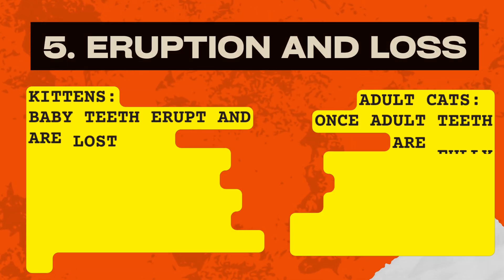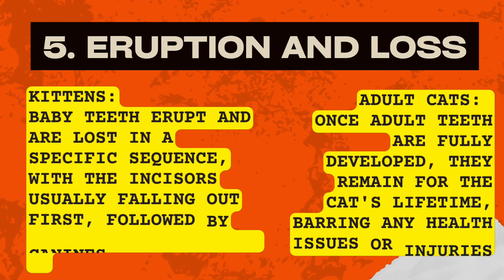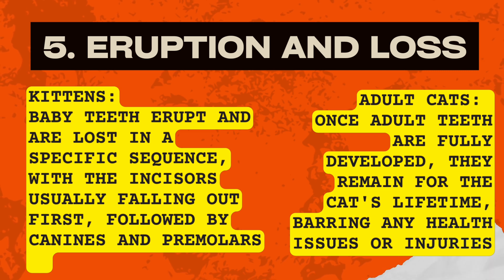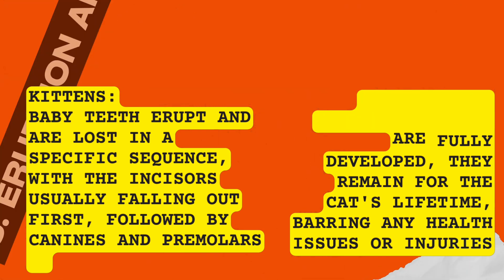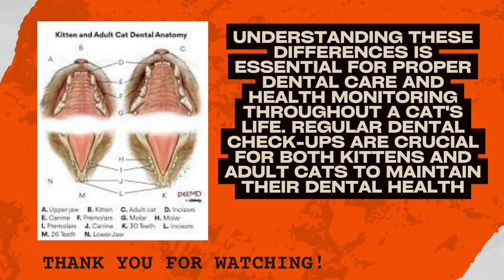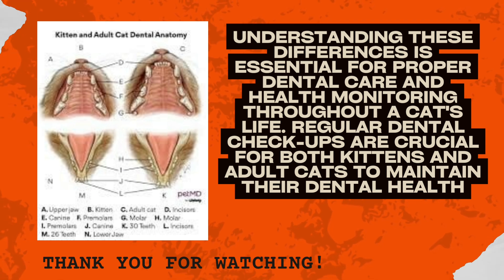Fifth, eruption and loss: baby teeth erupt and are lost in a specific sequence, with the incisors usually falling out first, followed by canines and premolars. Once adult teeth are fully developed, they remain for the cat's lifetime, barring any health issues or injuries. Understanding these differences is essential for proper dental care and health monitoring throughout a cat's life. Regular dental checkups are crucial for both kittens and adult cats to maintain their dental health.